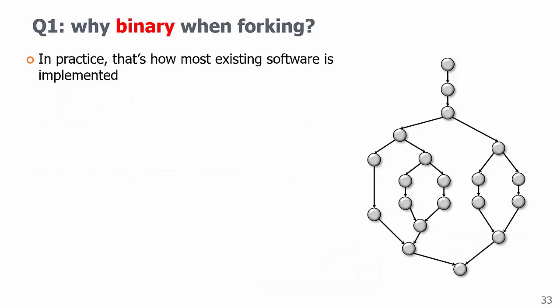Now let's talk about why we consider it as the base model. Question one, why binary when forking? One reason is that in practice, that's how most existing software is implemented. But more importantly, if you allow arbitrary forking with unit cost, then any PRAM algorithm will fit in this model with the same bounds.